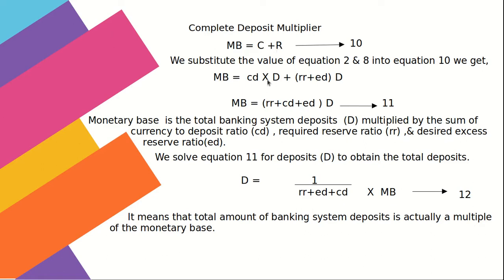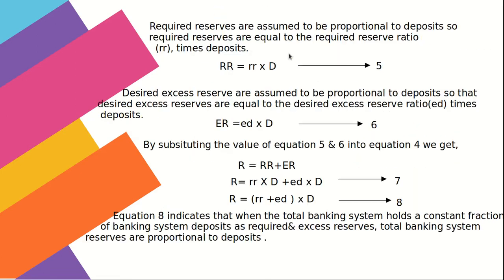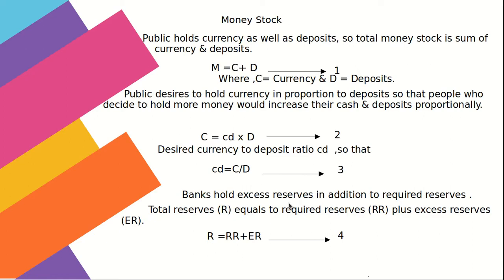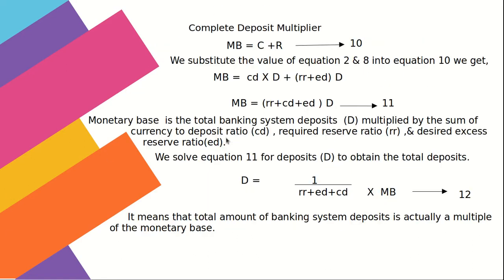Complete deposit multiplier: we know monetary base equals currency plus reserves. Substituting the values of currency (equation 2) and reserves (equation 8) into the monetary base equation, we get MB = (RR + CD + ED) × D. This means monetary base equals total banking system deposits multiplied by the sum of the currency-to-deposit ratio, required reserve ratio, and desired excess reserve ratio.